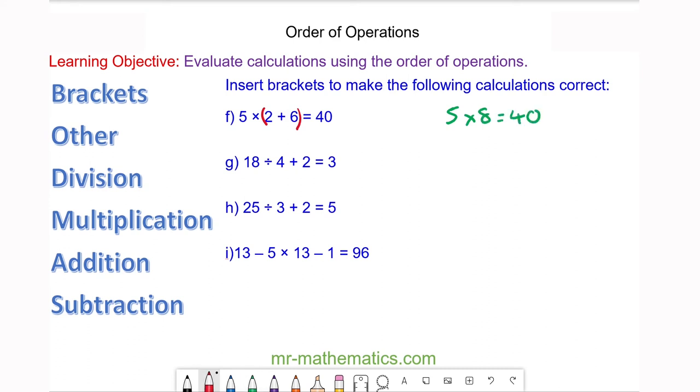For question g, we have a bracket before the 4 and after the 2, and 18 ÷ (4 + 2), which is 6, does make 3.